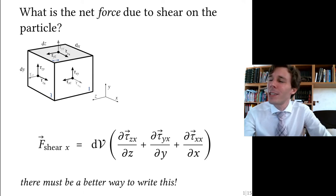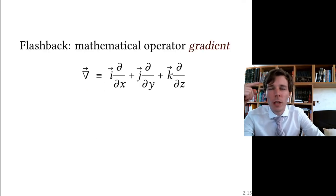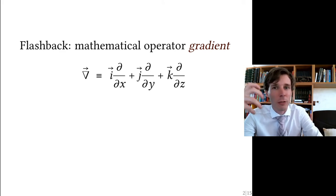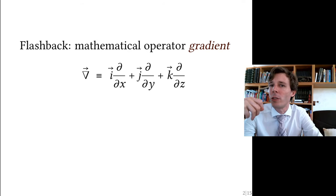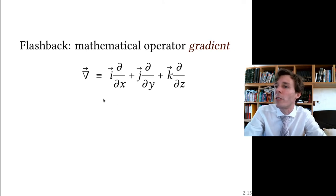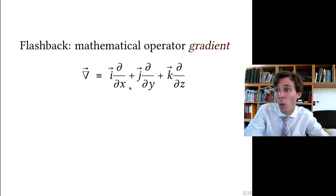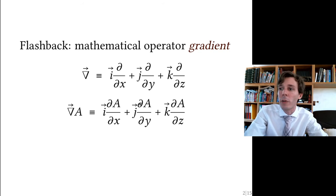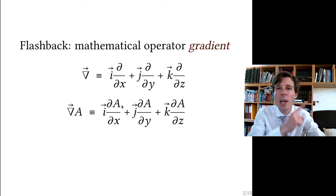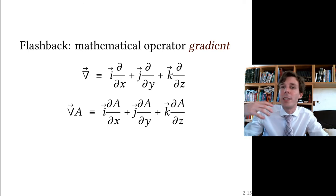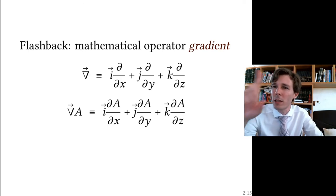There must be a better way of writing this, and there is. We need to go back to the previous operator: the gradient. The gradient doesn't mean anything by itself — it's waiting to be applied to something. It is applied to scalar fields such as pressure or temperature, and it gives you a vector in space. The local vector's X component is the change in X of that scalar, the Y component is the change in Y, and so on. Applied to a field A, the gradient tells you in which direction and by which magnitude the value of A is getting larger in space.